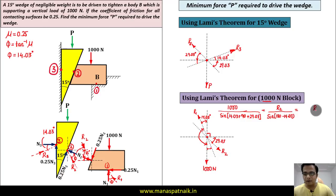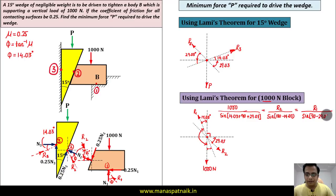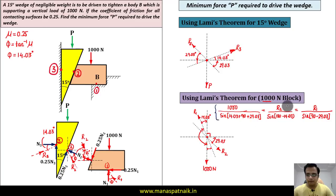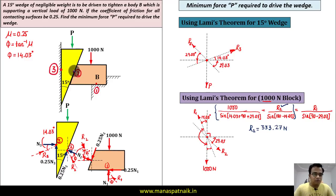For R1, the angle between the 1000 N force and R2 is 90 minus 29.03 degrees: R1 / sin(90 − 29.03). Although we don't strictly need R1, this completes the Lamy's theorem application for the block. The value of R2 = 333.27 N will now be used in the equation for the wedge.